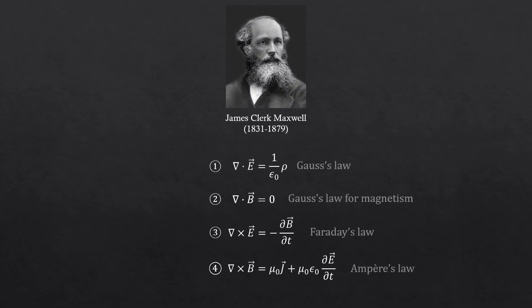In the previous videos, we covered all four of Maxwell's equations. These equations are also known as the equations of light, because together they describe the electric and magnetic fields, which combine to form the electromagnetic field. And that electromagnetic field is what most people simply call light.